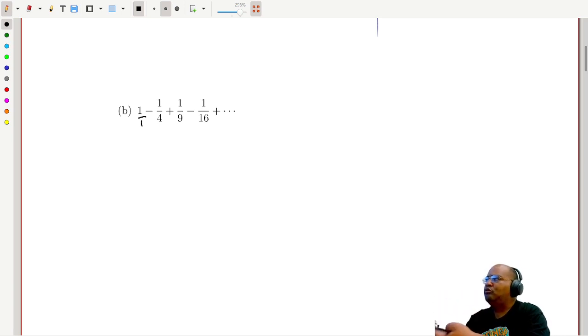Now think about the denominators of this, of the sequence here. We have 1, 4, 9, 16, what do you think comes next? Next would be 25, right? And we're alternating signs, plus, minus, plus, minus, so the next term would be, maybe 1 over 25, and maybe minus 1 over 36. Well, what is the rule? We're taking the reciprocals of squares, and then we're alternating the signs here.